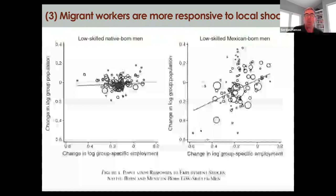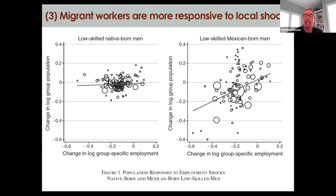Third, in thinking about spatial misallocation inside countries, what does immigration do? Here I'm citing work by Cadena and Kovac, looking at the excess mobility of immigrants to local labor demand shocks, which helps deal with differences in unemployment rates across regions within countries.